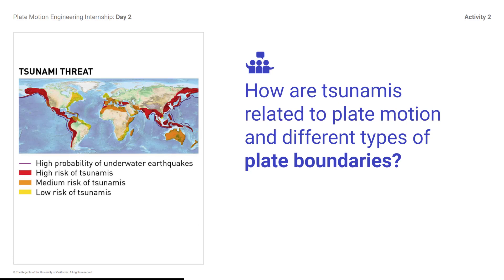How are tsunamis related to plate motion and different types of plate boundaries? Key points include: only earthquakes with very large magnitudes produce a tsunami; earthquakes that cause tsunamis usually occur under or very near the ocean; convergent boundaries can result in vertical seafloor movement that produces a tsunami; divergent and transform boundaries do not typically produce tsunamis because the plates do not move the seafloor vertically enough. What type of plate boundary was represented by the tsunami model? You might respond: Convergent — it was showing subduction.